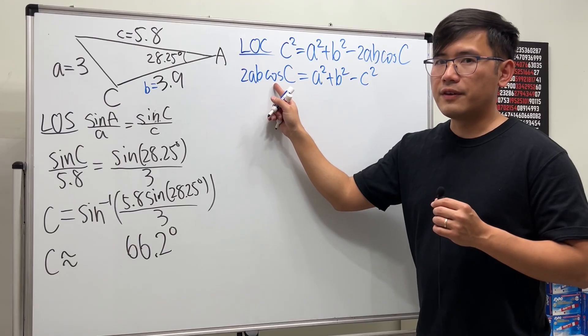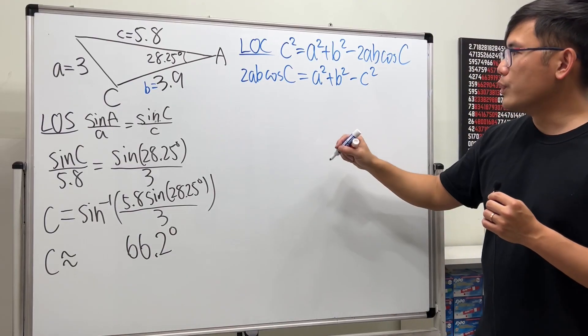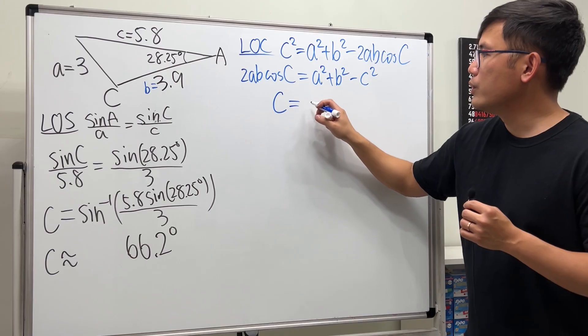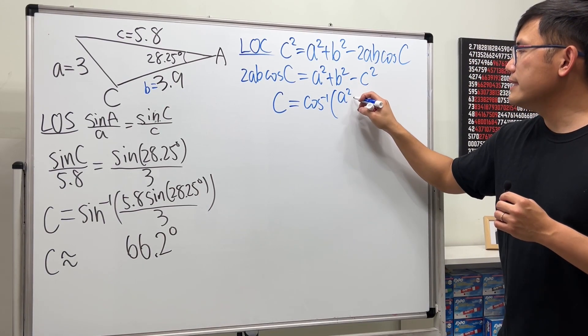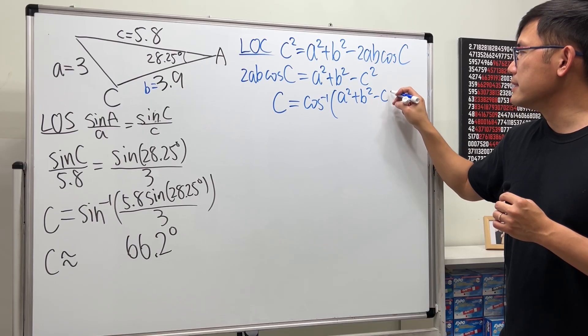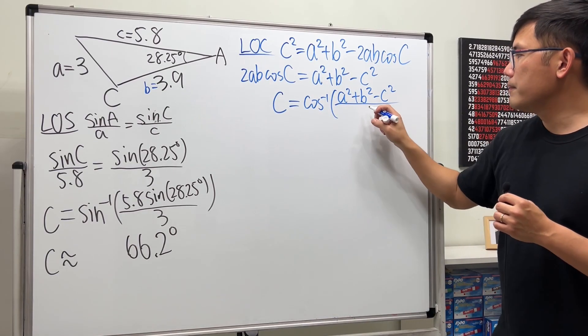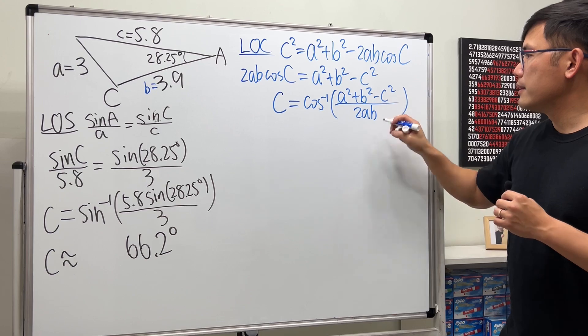Then I will divide both sides by 2ab, then take the inverse cosine on both sides. And we will get angle c being equal to inverse cosine of these three things, a squared plus b squared minus c squared over 2ab, like this.